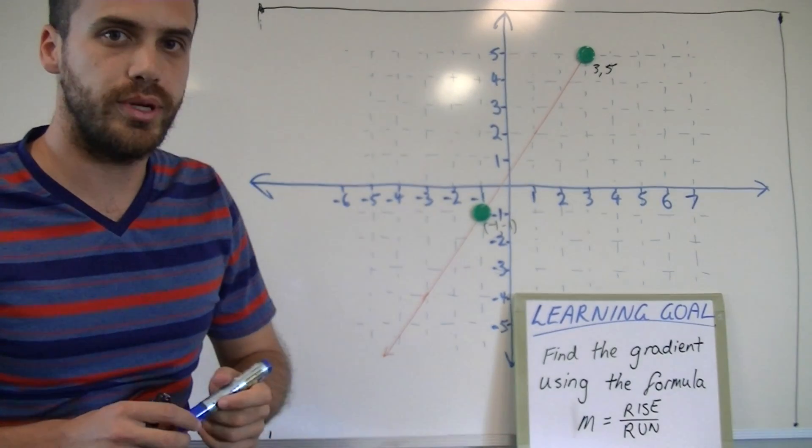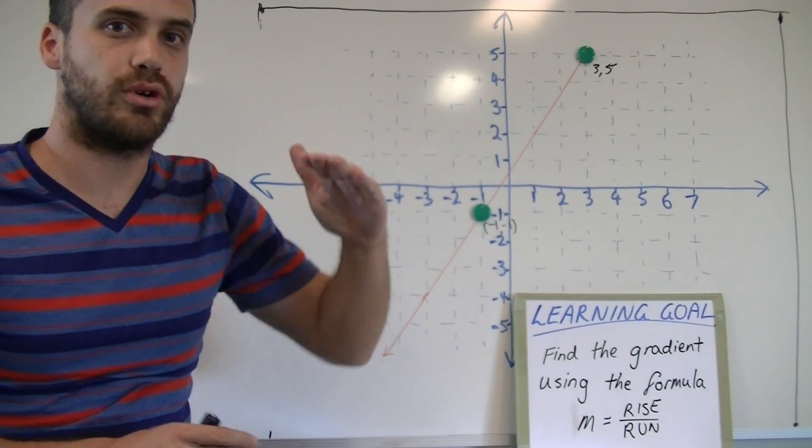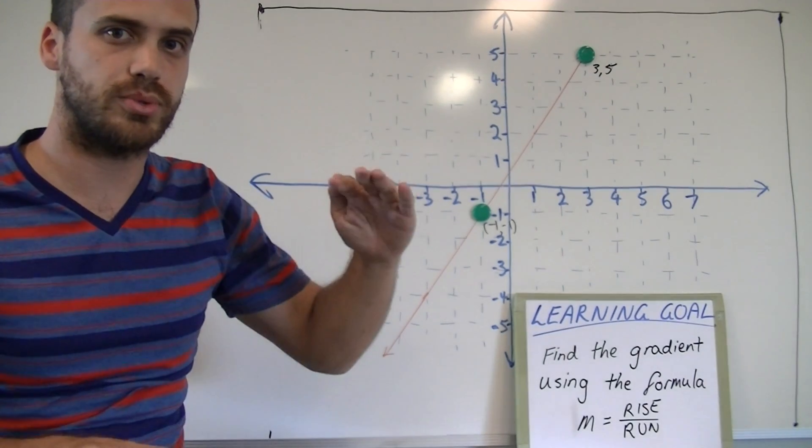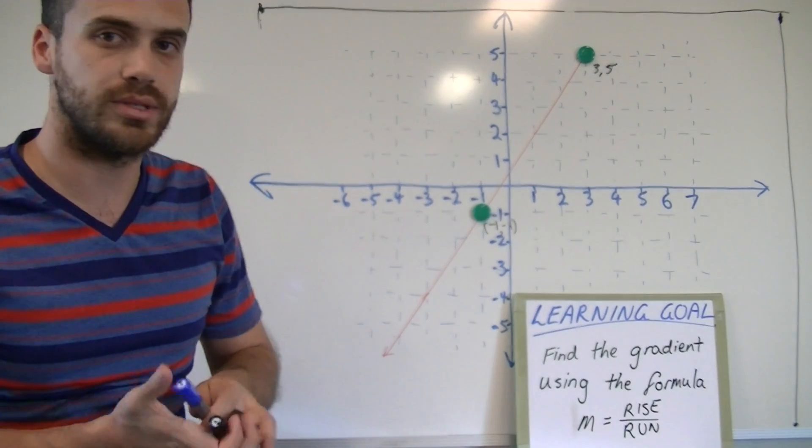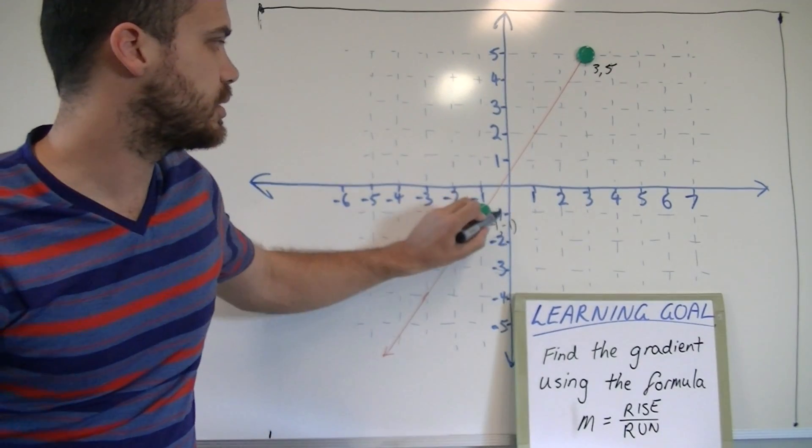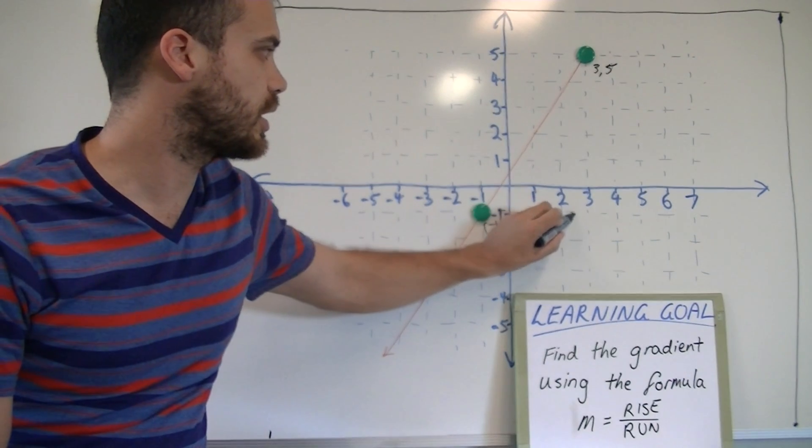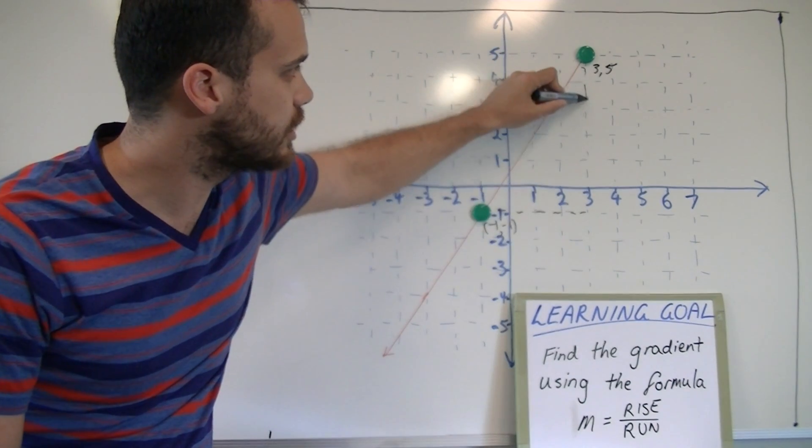Now, once we've got those points, we need to find our rise, how much it rises between those two points, and our run, how far across it goes between those two points. A really simple way to do that is to draw a right-angled triangle like this.